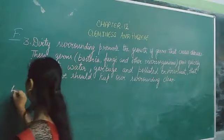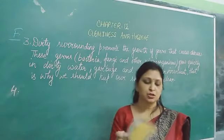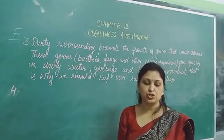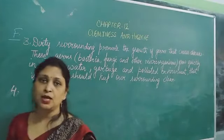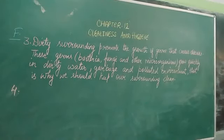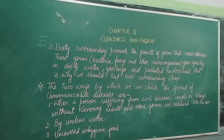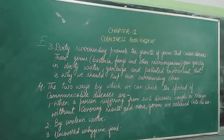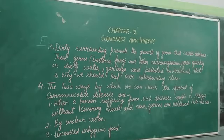Now question number 4: mention any two ways by which we can check the spread of communicable diseases. The two ways are: first, when a person suffering from such diseases coughs or sneezes without covering their mouth and nose, germs are released into the air. Second, by unclean water. Third, uncovered unhygienic food.